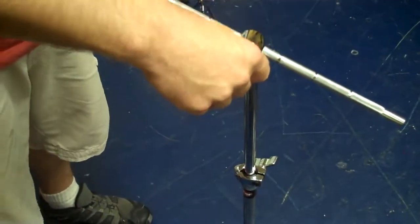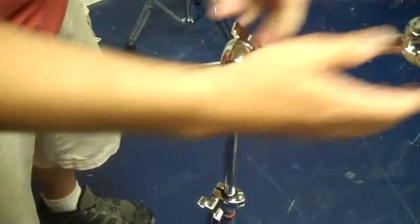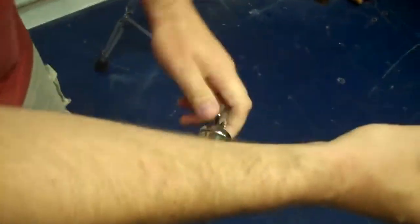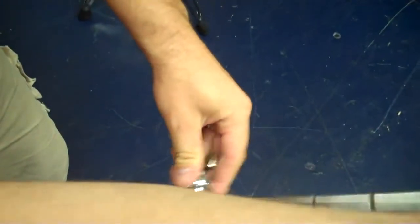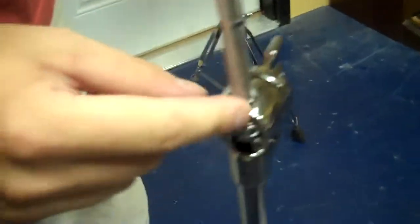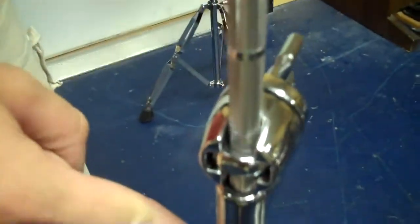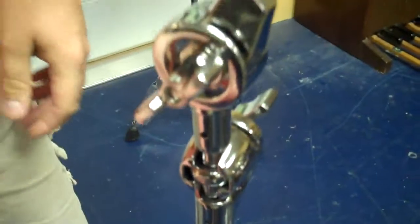Now if you decide you don't want to use the boom part, you can simply just make sure it's straight here and then it slides down inside of this tube and you can make it a straight stand.